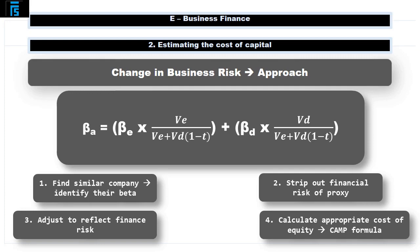The value of debt net of tax is simply the value of debt multiplied by one minus t. The new beta derived only reflects the business risk and is referred to as an asset or ungeared beta. Before this can be used, it needs to be adjusted to reflect the financial risk of the company — a process referred to as re-gearing — using the same formula in reverse. The resulting equity beta reflects both the business risk of the new project and the financial risk of the underlying company, and can be used in the CAPM formula to calculate an appropriate cost of equity, which in turn can be used to calculate a project-specific WACC.